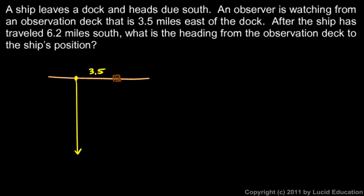And then we're asked, after the ship has traveled 6.2 miles south, so this distance here will be 6.2, and those distances are in miles. After the ship has traveled 6.2 miles south, so it ends up down here, what is the heading from the observation deck to the ship's position? So if this observer looks from the observation deck here to spot the ship, what is that direction? And we're specifically asked for the heading, the compass heading, from here to here.